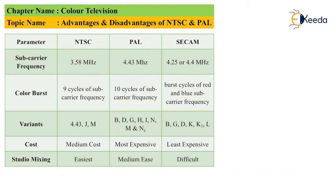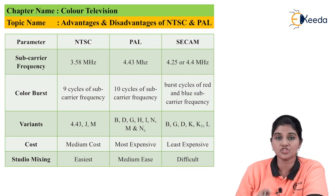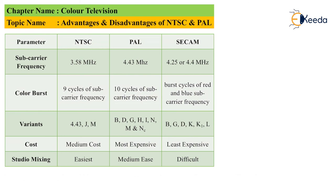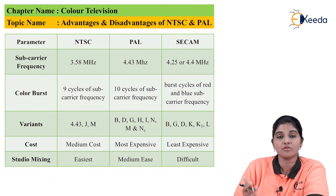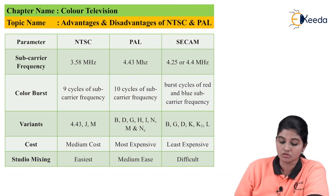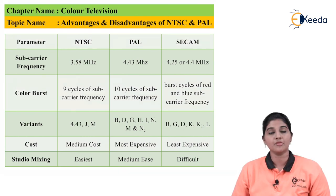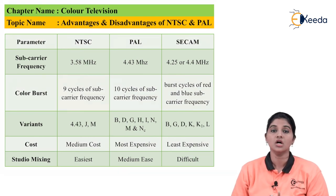For variants: NTSC variants are 4.43, J, and M. PAL variants are B, D, G, H, I, N, M, and NC. SECAM variants are B, G, D, K, K1, and L. From a cost perspective, NTSC is cheapest, PAL is the most costly, and SECAM is the least expensive. For studio mixing: NTSC is very easy, PAL is of medium complexity — not as difficult as SECAM but not as easy as NTSC — and SECAM studio mixing is the most difficult. These are the parameters on which we can differentiate between the three television standards.